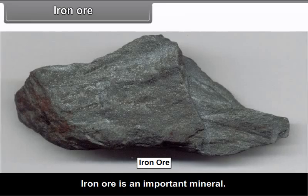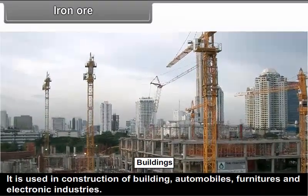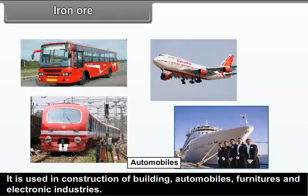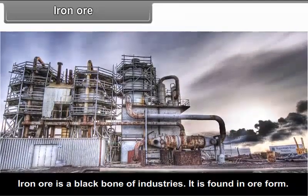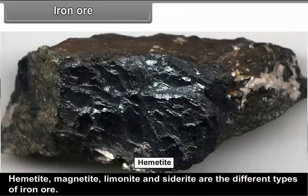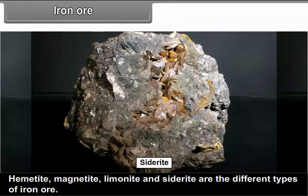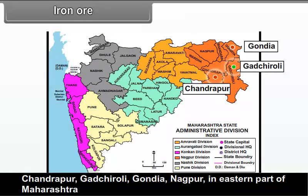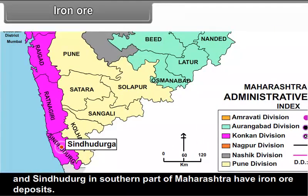Iron ore: Iron ore is an important mineral. It is used in construction of buildings, automobiles, furniture and electronic industries. Iron ore is the backbone of the industries. It is found in ore form. Hematite, Magnetite, Limonite and Siderite are the different types of iron ore. Chandrapur, Gadchiroli, Gondiya and Nagpur in the eastern part of Maharashtra, and Sindhudurg in the southern part of Maharashtra, have iron ore deposits.